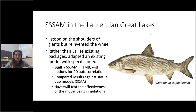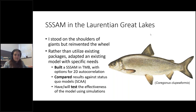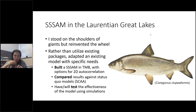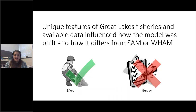I did the same three-pronged experiment I've been seeing across the world: I built a state-space stock assessment model in TMB with additional options for 2D autocorrelation, compared its results against the status quo model — a statistical catch-at-age model used in the Great Lakes — and will in the future test the effectiveness of this model using simulations. There are unique features of the Great Lakes fisheries and data that made my model differ considerably from either SAM or WHAM.